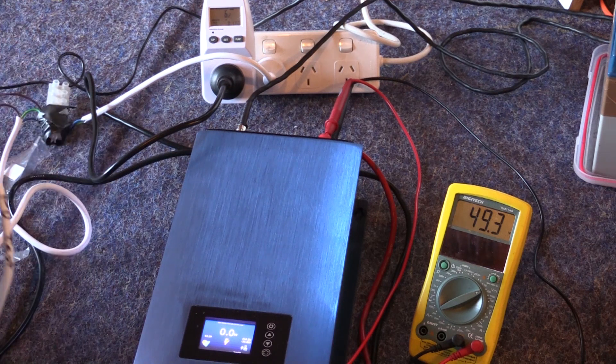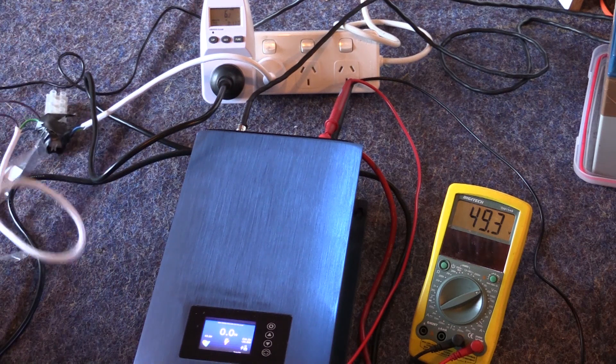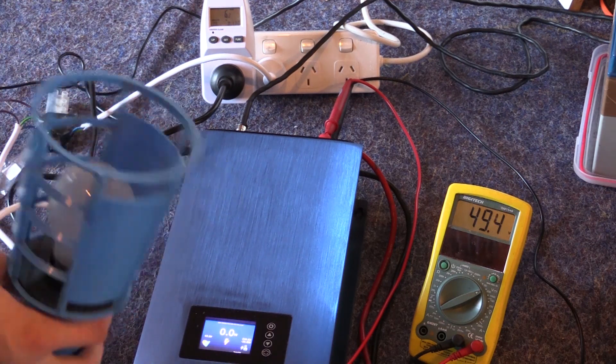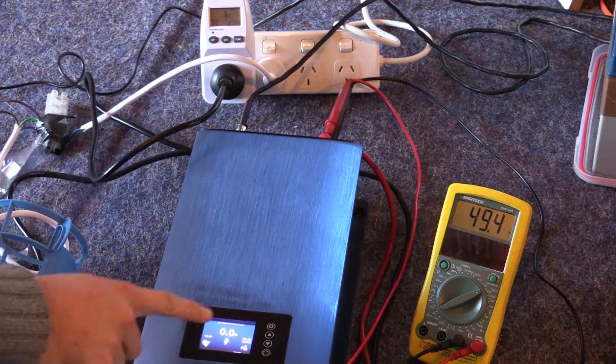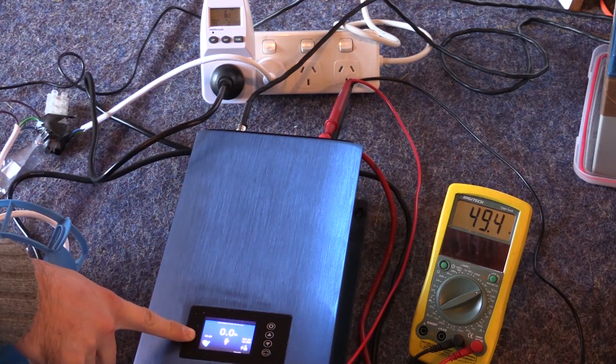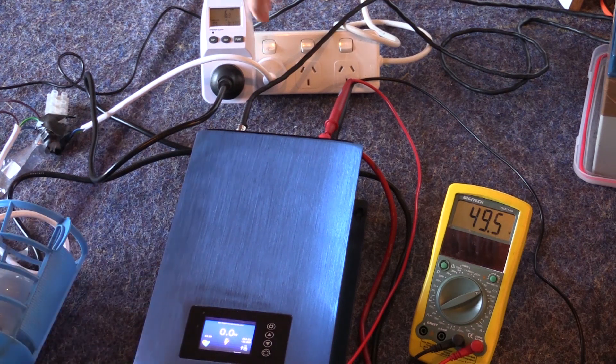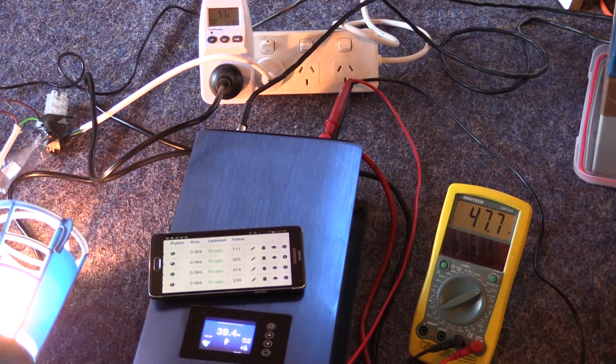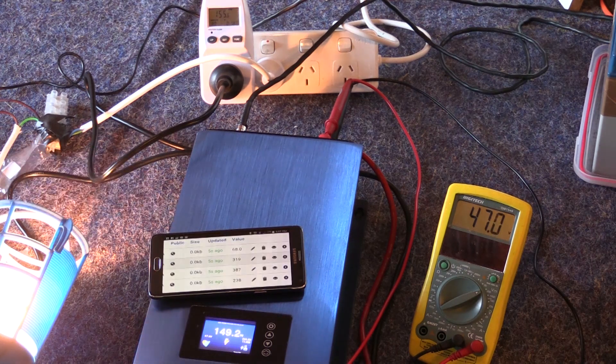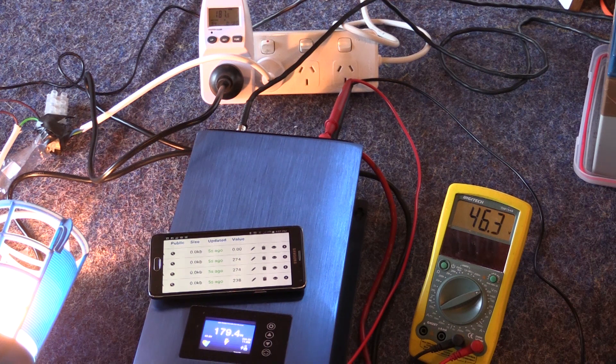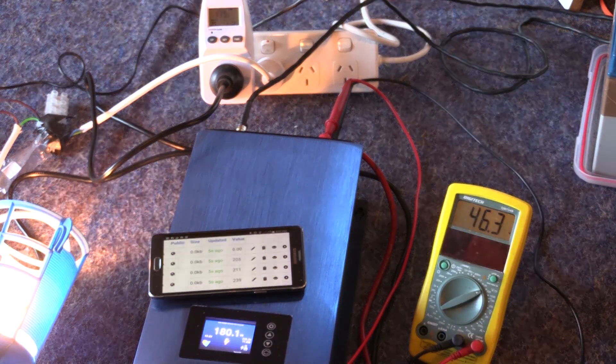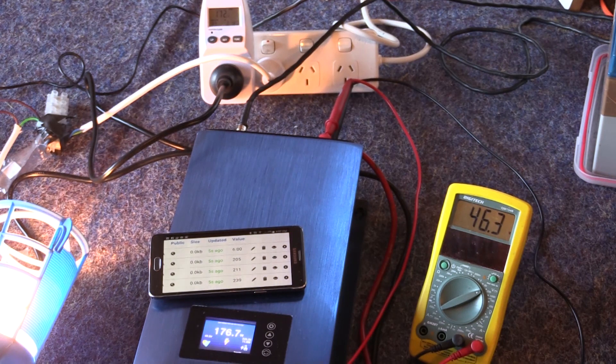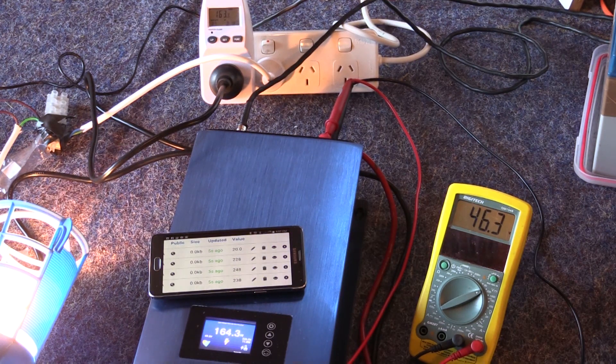I just can't exactly remember what wattage light bulb this is now. Let me have a quick look. It's a 40. So this is a 40 watt just basic cheap light bulb. So we should actually be seeing 40 watts pushed back out, not 100 and something. So the CT clamp could do with some calibration. But all in all, it appears to be working, I think.